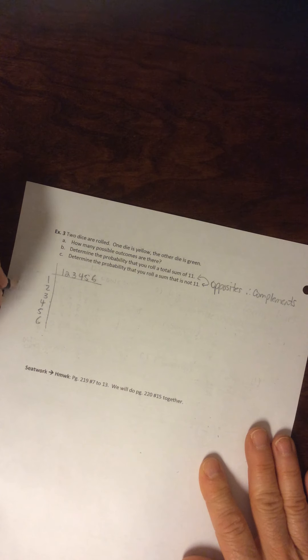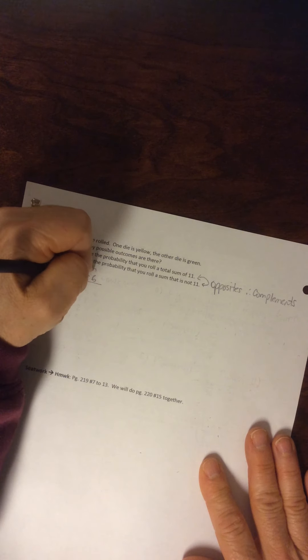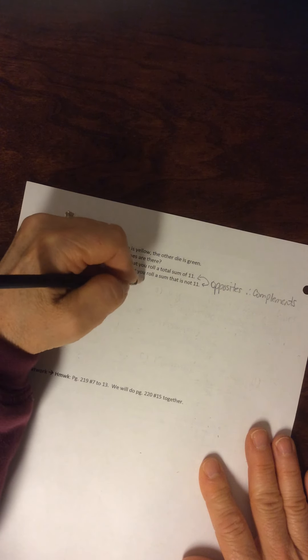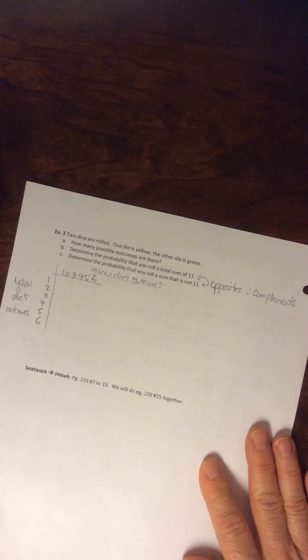So we can call this the yellow die outcome, yellow die's outcomes, and this would be the green. Green die's outcomes. Okay?